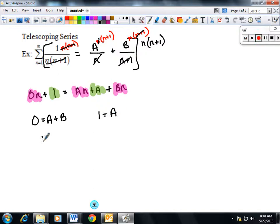So if 1 equals a, then b is negative 1. So it would be 1/n minus 1/(n+1). And that's how I got to the beginning of the previous example.